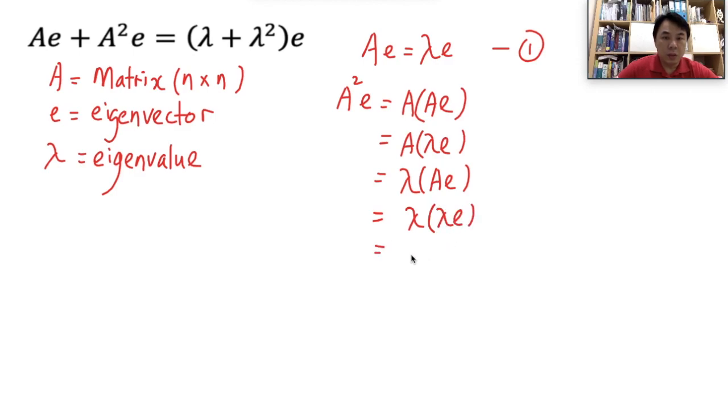We know that scalar multiplications is satisfied here. Therefore, we have proven that A squared e can be given as lambda squared e here.